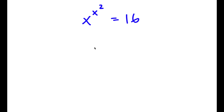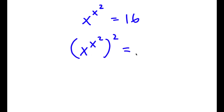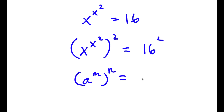The first thing I'm going to do is take both sides to the power of 2. So now I have x to the power of x to the power of 2, to the power of 2, is equal to 16 to the power of 2. Now if I have something in the form a to the power of m to the power of n, this is the same thing as a to the power of m times n.